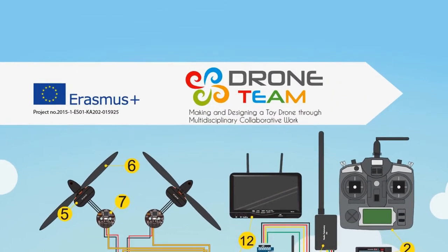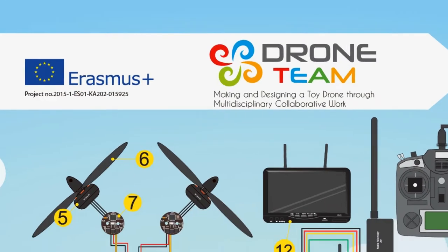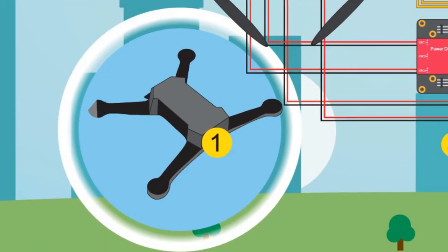Drone team project. In this video we are going to go through all the components in our drone. The frame is the base on which the other components are assembled. The most common configuration uses four motors. For heavy drones it is advisable to use six or eight motors.